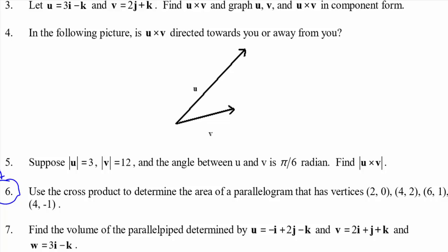So U cross V can't be sticking out of the screen, right? Because U, V, and U cross V form a right-hand system.